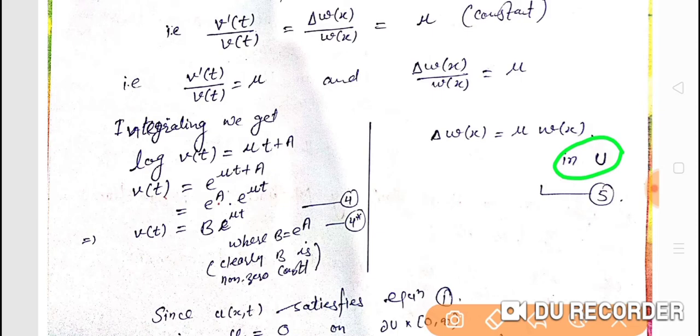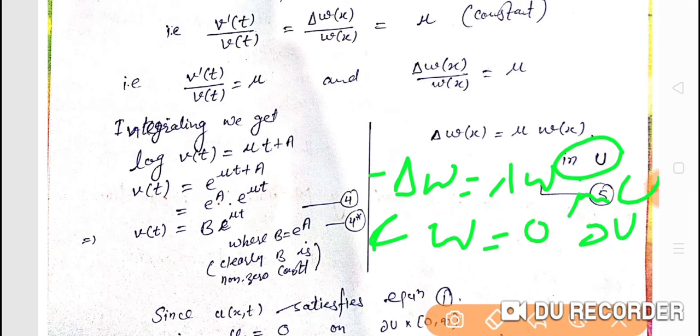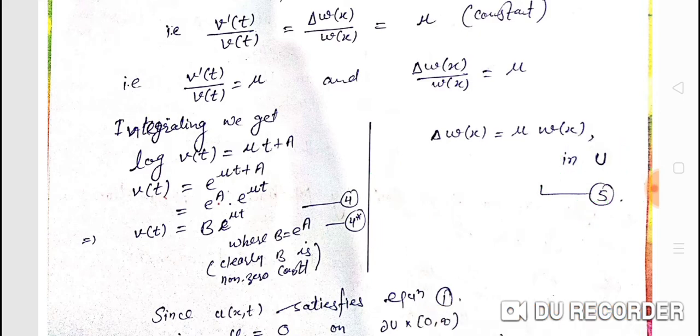Now we relate this to the eigenvalue and eigenfunction definition. We had minus delta w equals lambda w in u. From delta w equals mu w, we can write minus delta w equals minus mu w. So comparing with the eigenvalue definition, we see that mu equals minus lambda, or lambda equals minus mu is the eigenvalue.